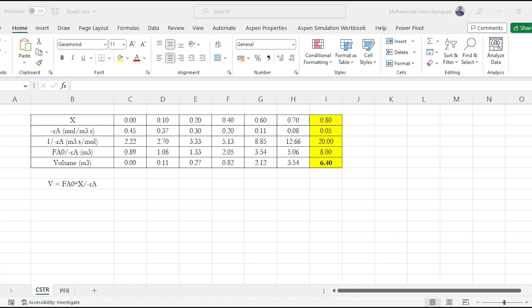Moving to Excel sheet, this was for CSTR calculation. We were given x and minus RA. First we calculated 1 over minus RA by dividing 1 by 0.45 and so on for all values. Then multiplying all these with FA0, and finally the formula is FA0 x over minus RA. We multiplied C2 with C5 and got the volume at each point. For 80% conversion, 6.4 cubic meters or 6400 cubic decimeters volume was required.